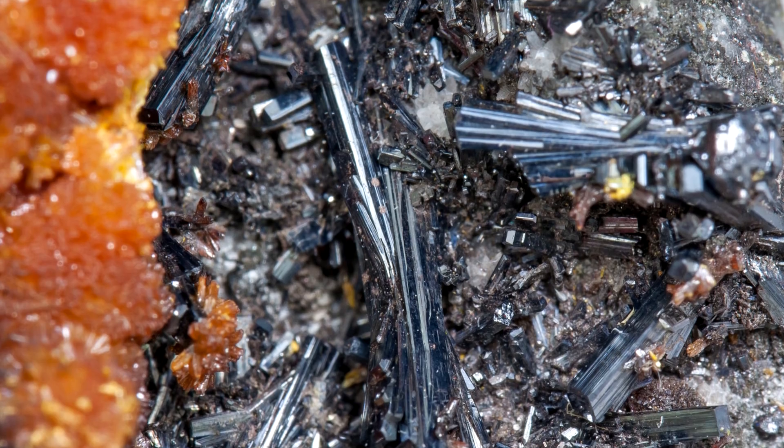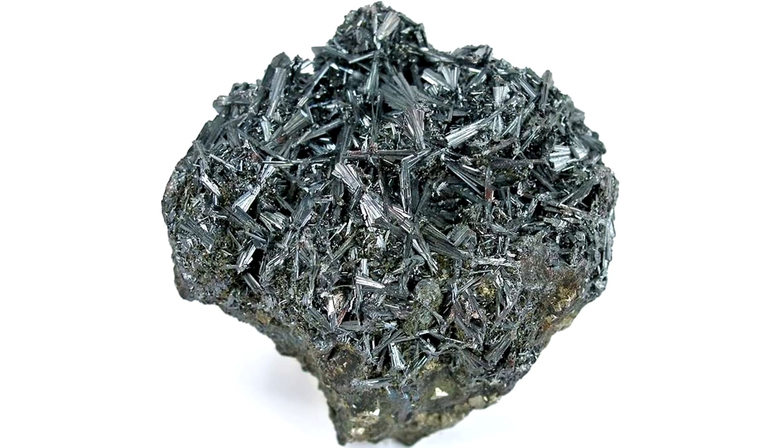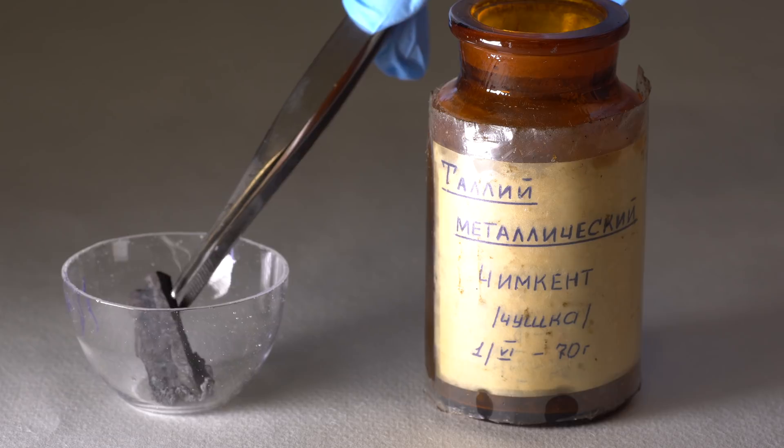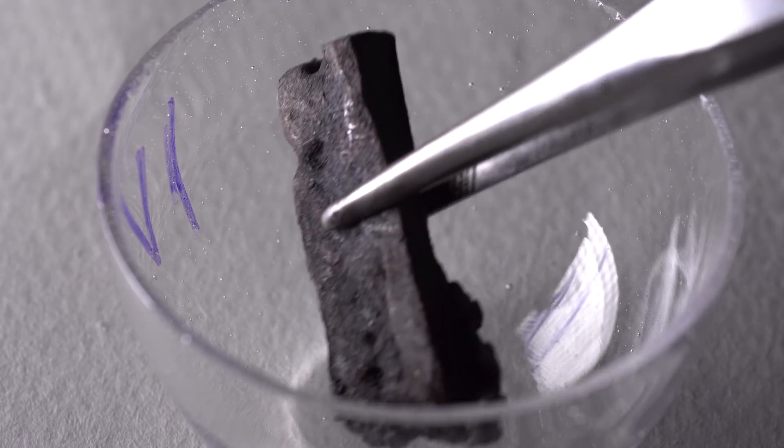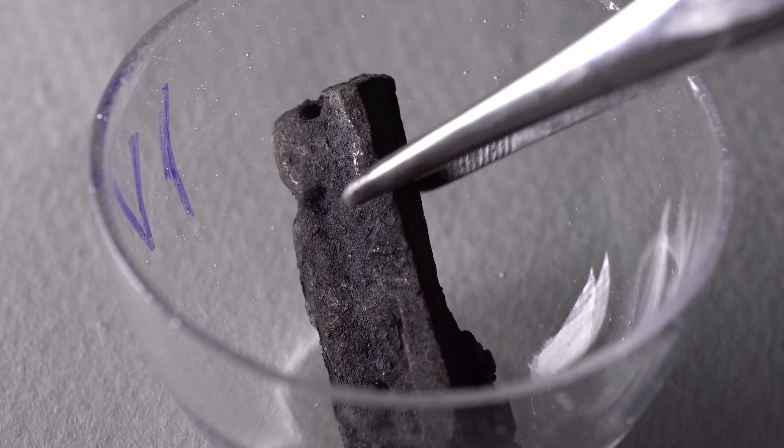Nowadays it's mostly extracted from sulfuric heavy metals such as crocosite and gieseonite. In our laboratory, I got quite old pieces of thallium for my experiments that were produced back in 1970. Since then they have been strongly oxidized and covered in a dark thallium oxide.